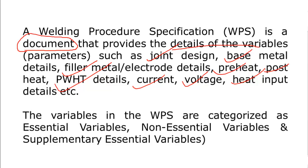Variables like joint design, base metal, pre-heat, post-heat, and current/voltage are categorized as essential variables. Some variables are known as essential variables, some as non-essential variables, and some are called supplementary essential variables — three main categories in total.